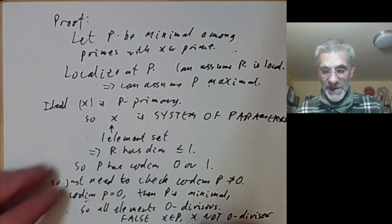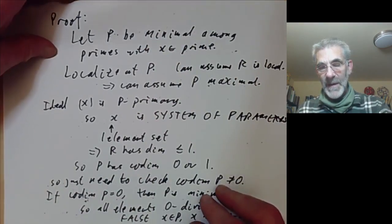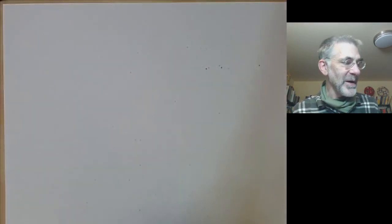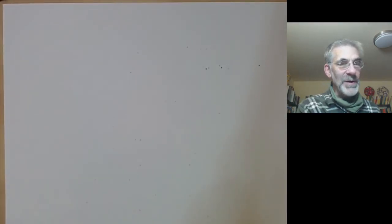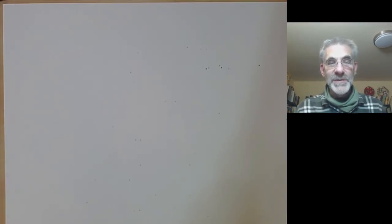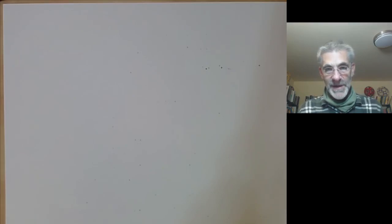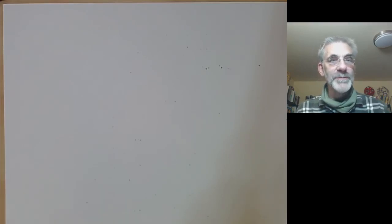That's more or less the end of the part on dimensions of local rings. What we're going to do next is discuss various properties of local rings, such as being regular, a local complete intersection, Gorenstein, or Cohen-Macaulay.